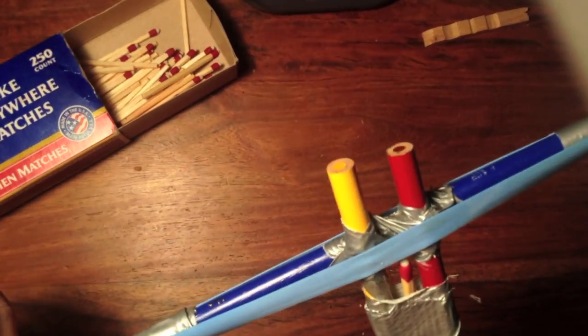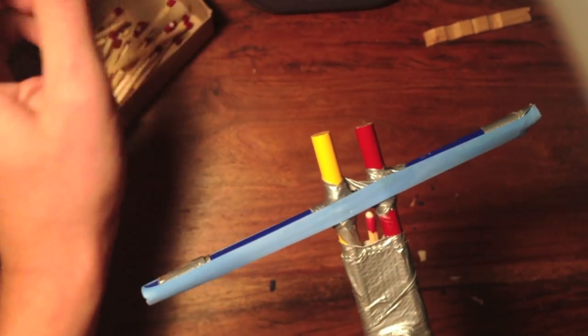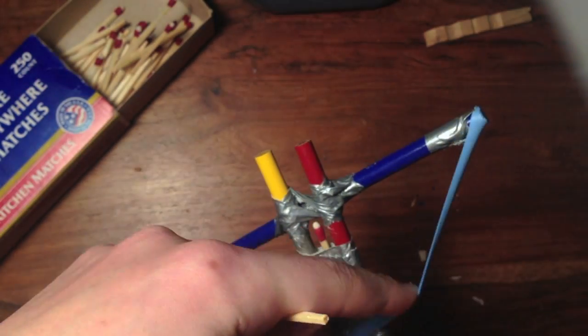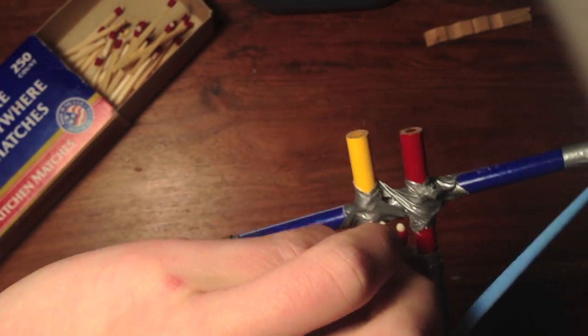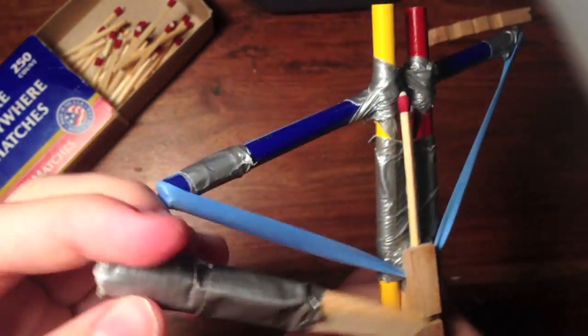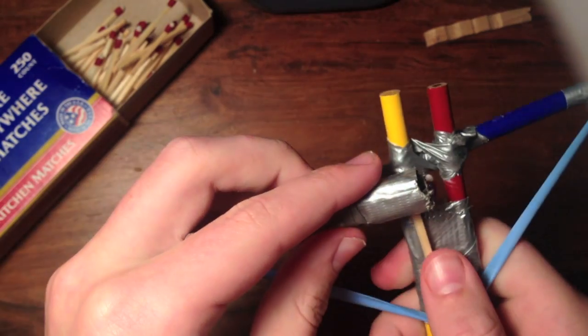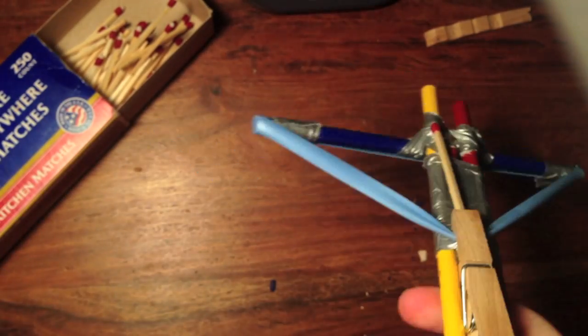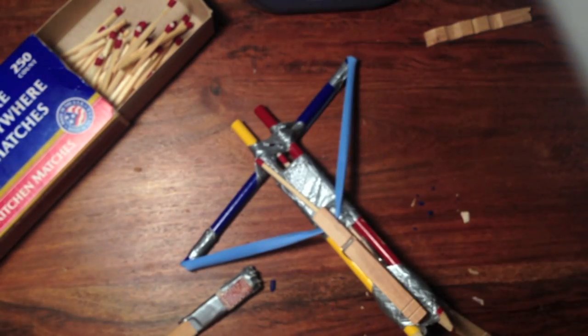It'll shoot pretty far. To actually light it, reload it, take it, put it like that, then slide down the bottom part, turn it around, hold your finger, strike it, and shoot it. That's how to make that.